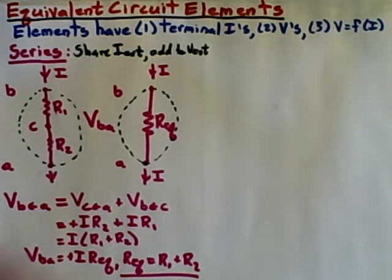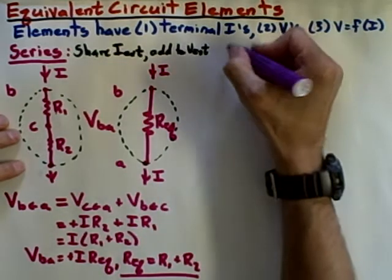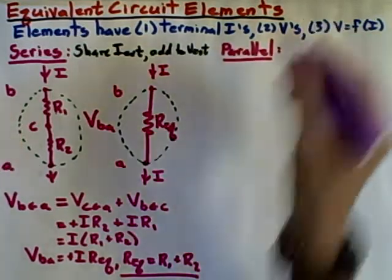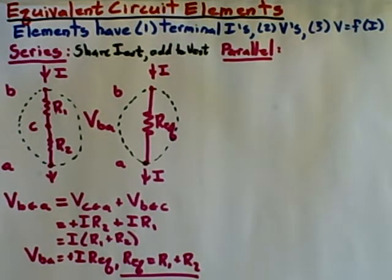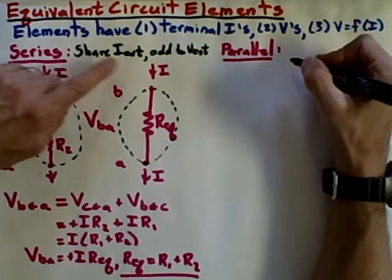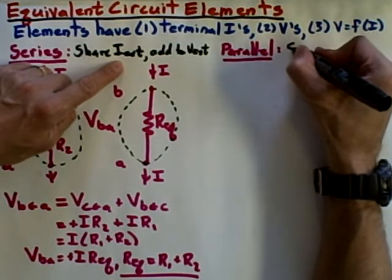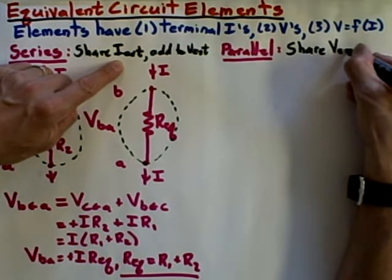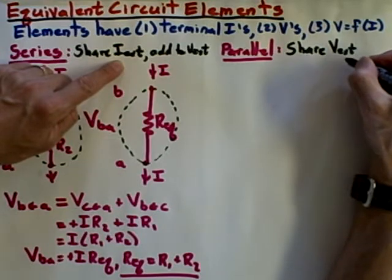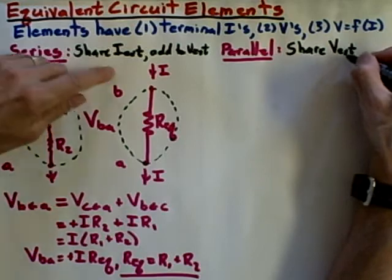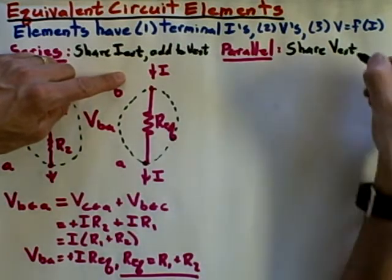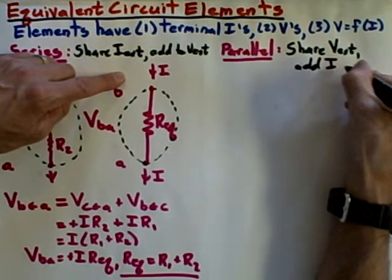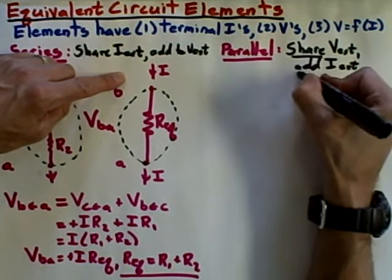The complementary type of wiring would be called a parallel circuit or a parallel combination. And this is different in a precisely complementary way. As we shall see, rather than sharing the external current and having the both elements having that same external current, we're going to see that a parallel combination shares where both elements have precisely the same voltage across them, namely the external voltage. Similarly, we're going to find that their currents add together to the total. So they add together to get the I external. So it's a sharing versus adding.